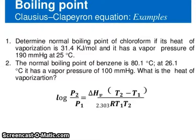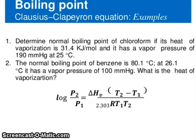Determine the normal boiling point of chloroform if its heat of vaporization is 31.4 kJ/g and it has a vapor pressure of 190 mmHg at 25°C. Also, the normal boiling point of benzene is 80.1°C; at 26.1°C it has a vapor pressure of 110 mmHg — what is the heat of vaporization? Use: log(P2/P1) = ΔHv(T2 − T1) / (2.303 R T1 T2).